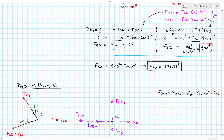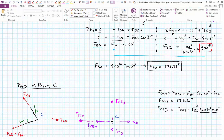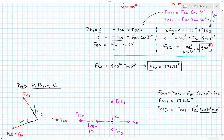FCBx equals 173.21 pounds in the negative direction. FCBy equals FBC sine of 30 degrees — plugging in 200 pounds times sine of 30 gives 100 pounds. This makes sense because the whole system is just vertically carrying that 100 pounds applied at the bottom. We can now put those values into the diagram: 173.21 pounds horizontally and 100 pounds vertically.